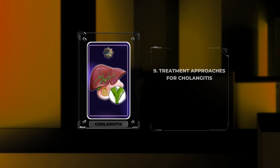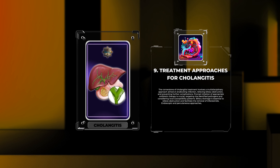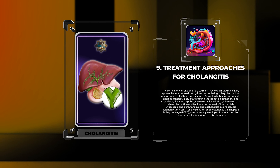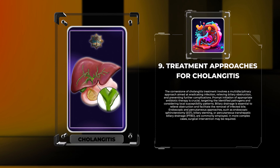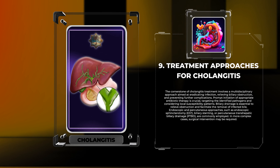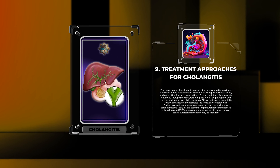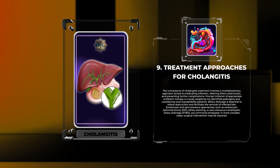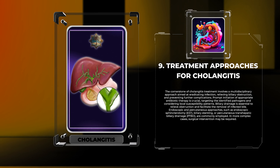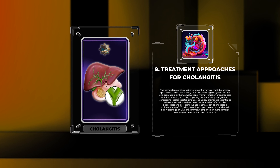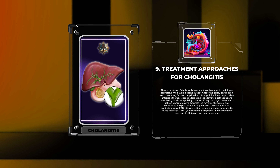The cornerstone of cholangitis treatment involves a multidisciplinary approach aimed at eradicating infection, relieving biliary obstruction, and preventing further complications. Prompt initiation of appropriate antibiotic therapy is crucial, targeting identified pathogens and considering local susceptibility patterns. Biliary drainage is essential to relieve obstruction and facilitate removal of infected bile. Endoscopic and percutaneous approaches — such as endoscopic sphincterotomy (EST), biliary stenting, or percutaneous transhepatic biliary drainage (PTBD) — are commonly employed. In more complex cases, surgical intervention may be required.